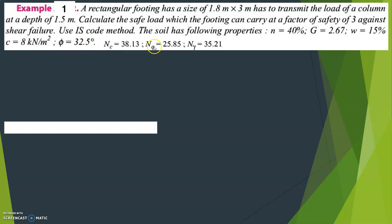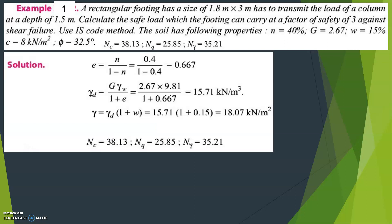Nc, Nq, and N-gamma values are given for 32.5 degrees. To calculate the safe load, first you have to calculate safe bearing capacity — that is safe pressure. To get safe pressure, first calculate ultimate bearing pressure, then net ultimate bearing pressure, and then safe bearing pressure.